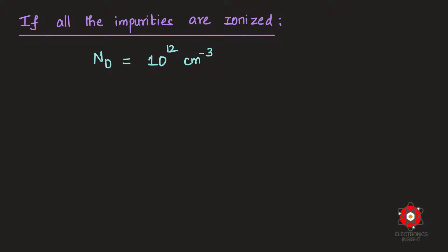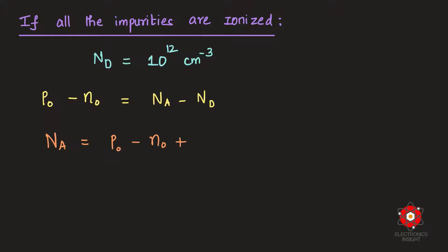Since all impurities are ionized and charge compensation applies, we use the equation: p₀ − n₀ = Na − Nd. Rearranging to solve for Na gives: Na = p₀ − n₀ + Nd.